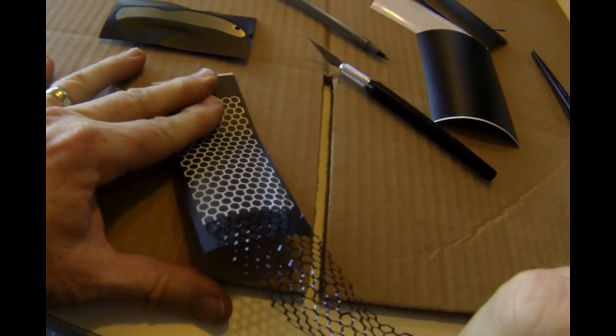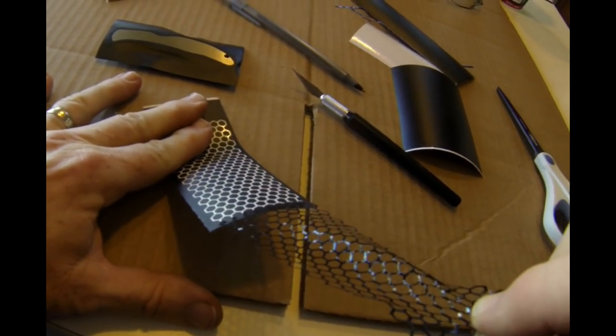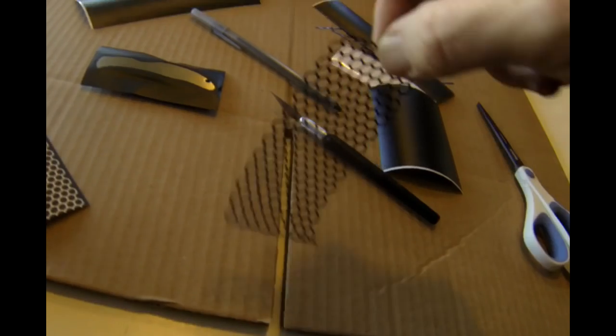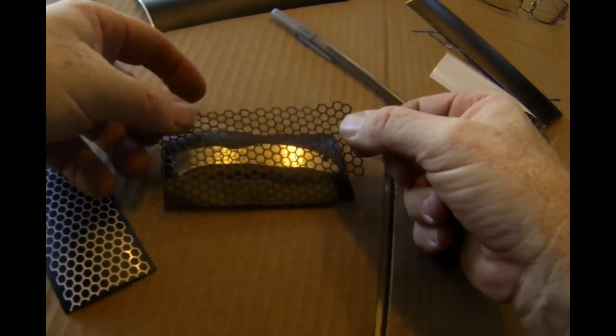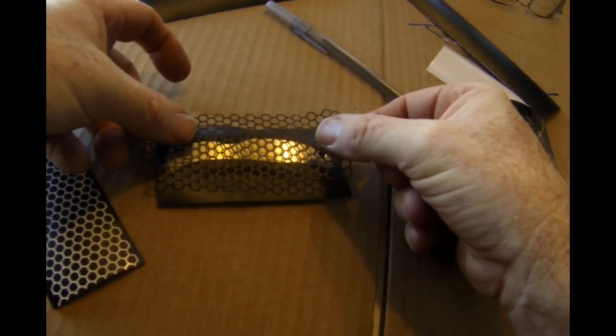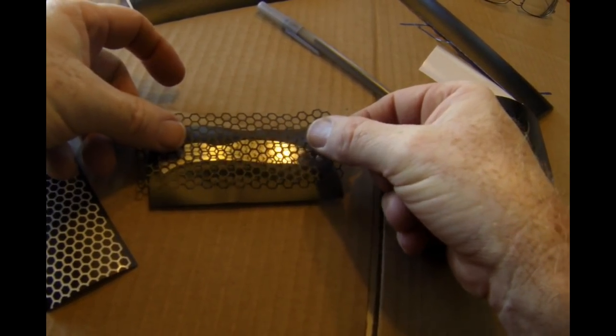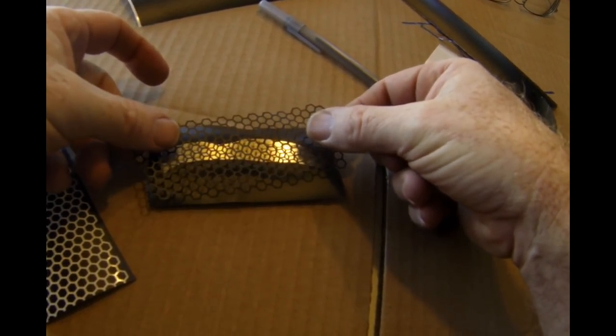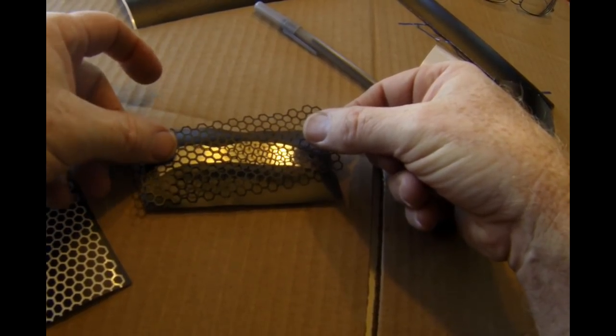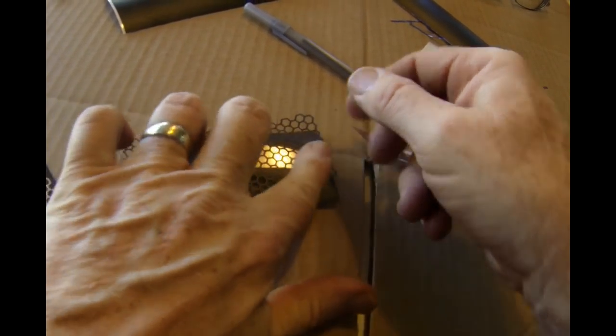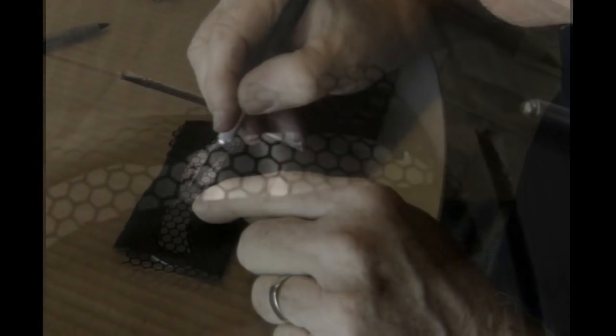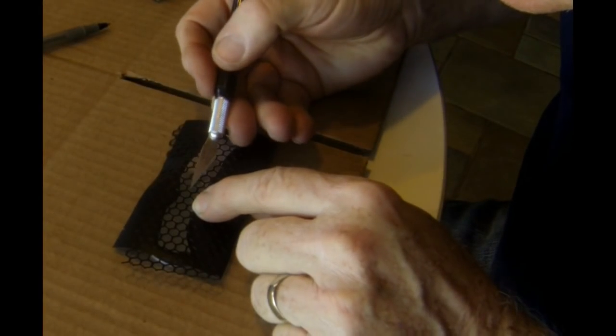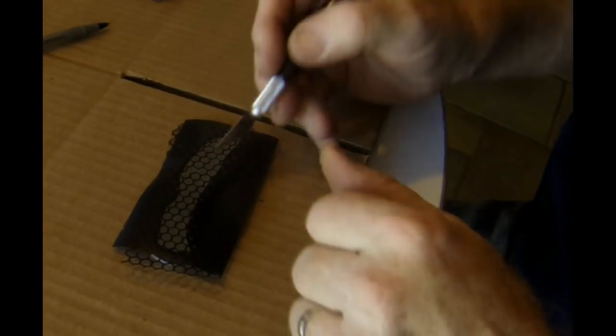Now I printed up a honeycomb pattern on that same Cameo Silhouette vinyl cutting machine. But you could do this with any pattern, any design that you'd like. You don't have to have a vinyl cutting machine. You can cut this vinyl out by hand. I'm sure that you could also buy some pre-made stickers of sorts. I had used this honeycomb on a recent knife making project and I was pretty happy with it. So I figured it would look good on the Spyderco.